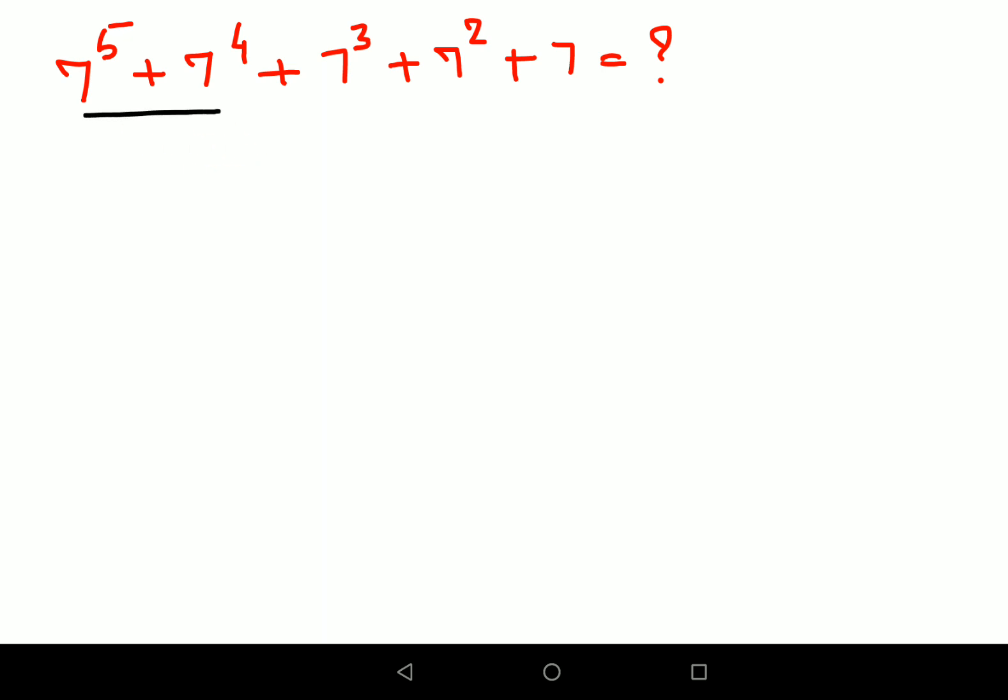So here we can say that between 7 raised to 5 and 7 raised to 4, I can take 7 raised to 4 common. So I am just left with 7 plus 1.